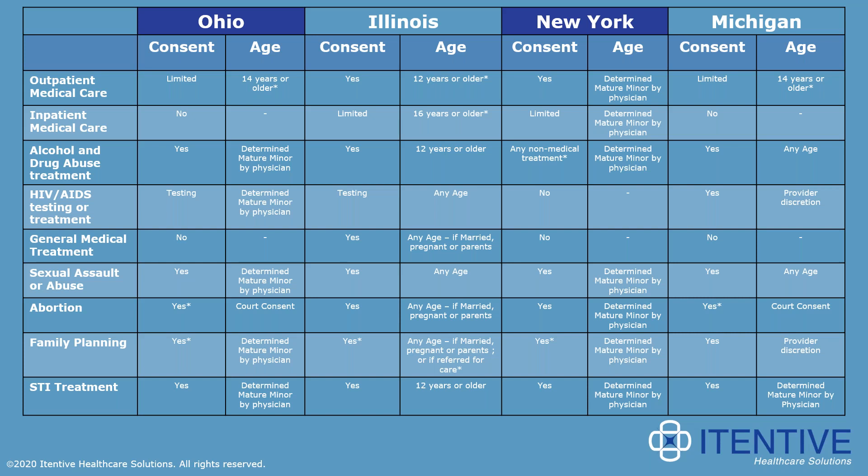Across the four states shown, there are different ages for different treatments — 12, 14, 16, and even any age appear on the slide. The moral of the story: if you are implementing or reviewing your practice policies around minor confidentiality, make sure you are thoroughly researching your individual state laws. We wanted to show you how much things can vary state by state and how these state laws are often stricter and more stringent than HIPAA laws.